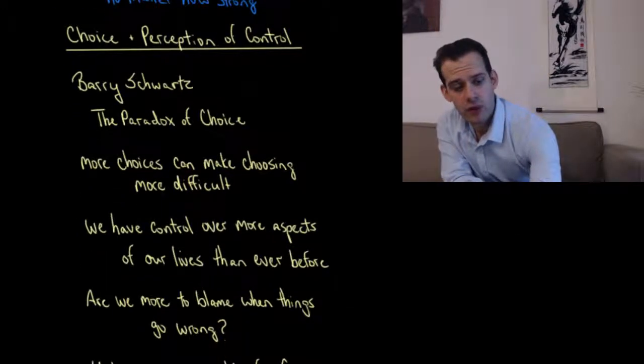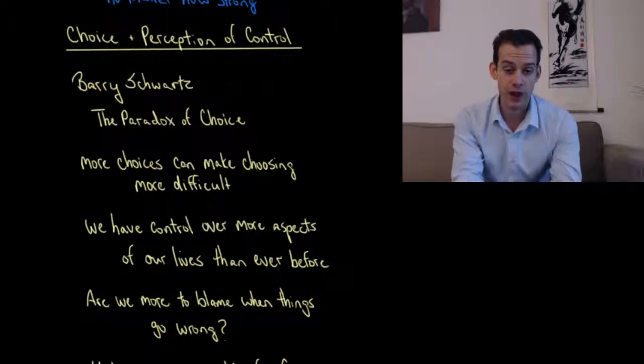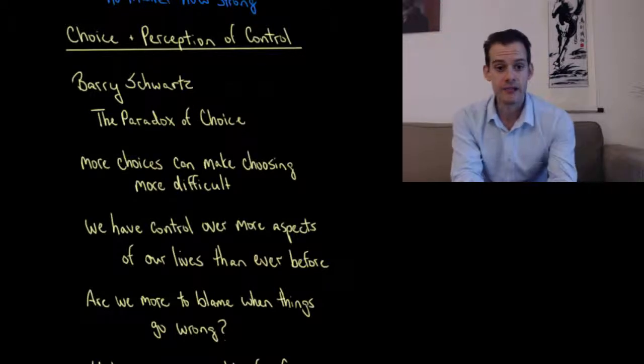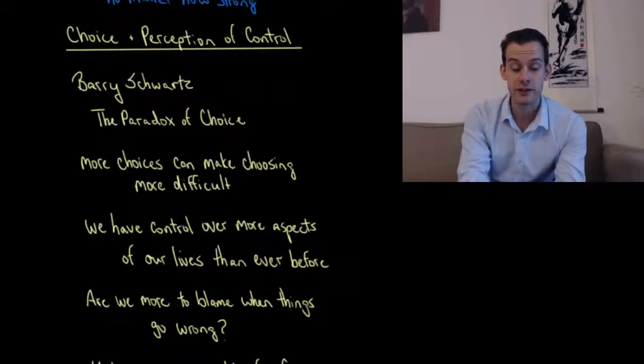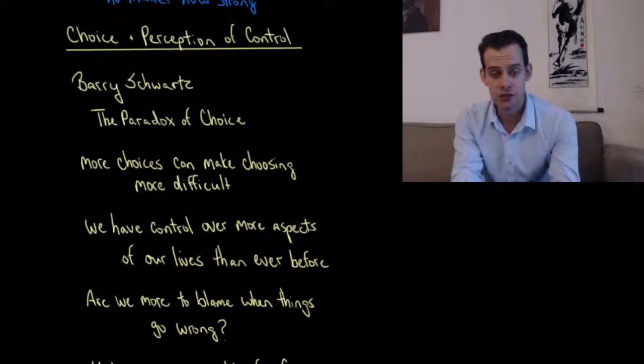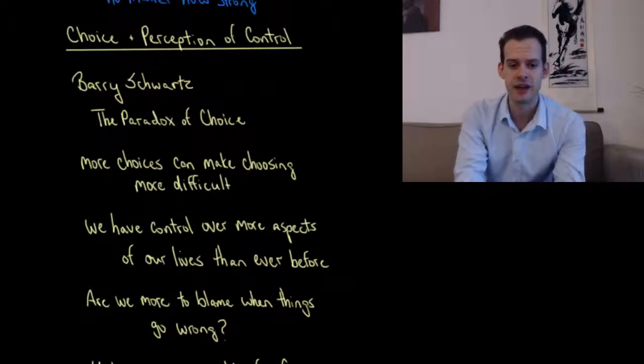We can also consider the role of choice because choice is related to our perception of control. If we have choice, we might think we have greater control over certain outcomes. And this is discussed by Barry Schwartz in his book The Paradox of Choice. And he points out that more choices can make choosing more difficult. So if you don't have any choice at all, if there's one option, then it's easy to make the decision. But if there's ten options, now making a choice is much harder.